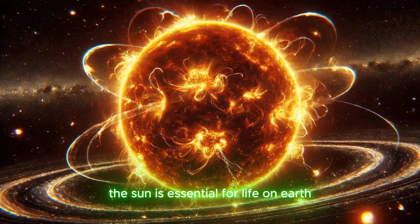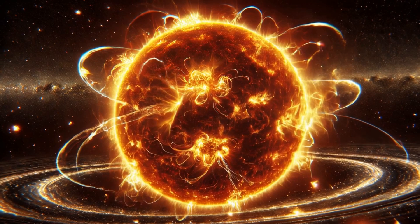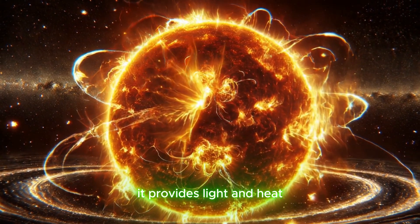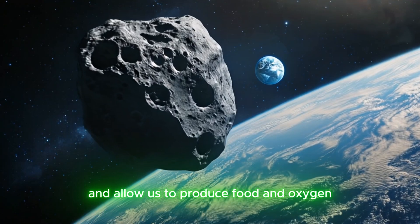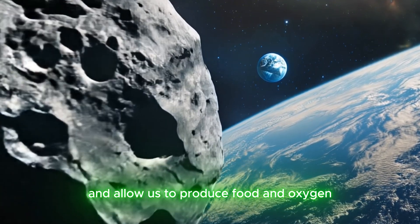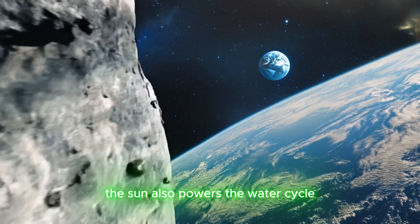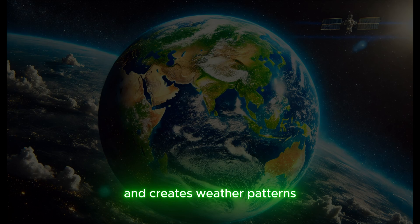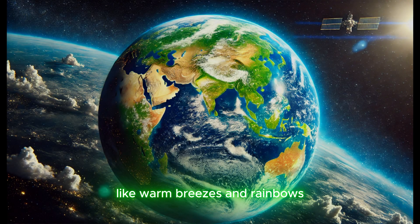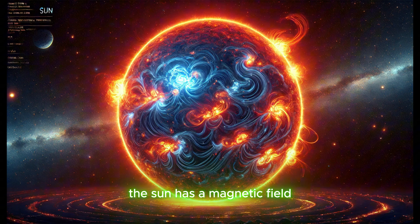The sun is essential for life on Earth. It provides light and heat, which help plants grow and allow us to produce food and oxygen. The sun also powers the water cycle and creates weather patterns like warm breezes and rainbows.